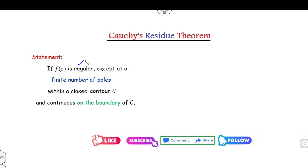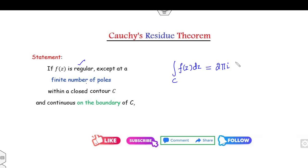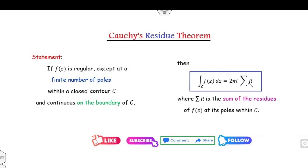Statement: If you have an analytic function except at a finite number of poles within the closed and bounded region C, then you can evaluate the integral of f(z) over the curve C, which equals 2πi times the sum of the residues, where the summation is the sum of all residues within C.